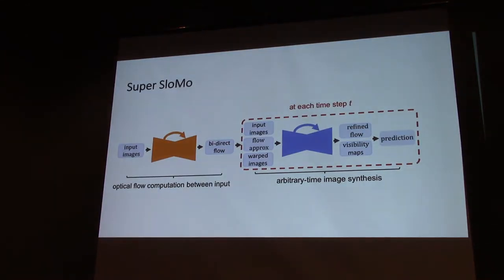To put everything together, we have the pipeline of Super Slow Mo. It consists of two major parts. In the first part, we estimate optical flow between input images - this is standard approach. In the second stage, we take initial flow approximation, then we output refined optical flow and visibility maps at each time step. Because the network parameters are not dependent on a particular time step t, this approach is able to generate an arbitrary number of intermediate frames given any t between 0 and 1.